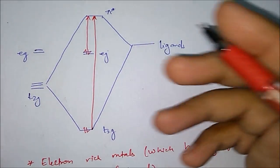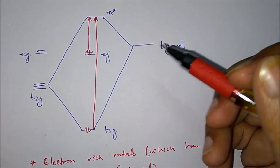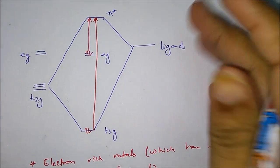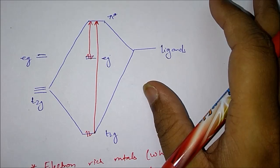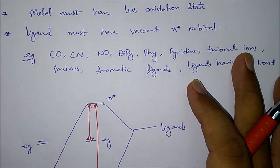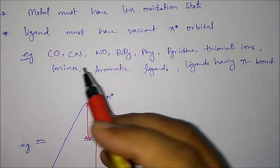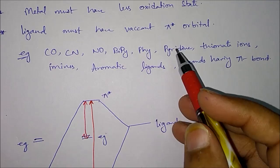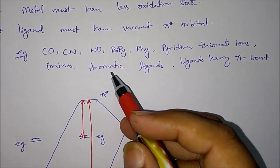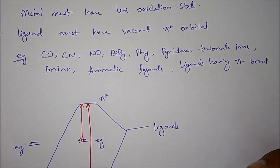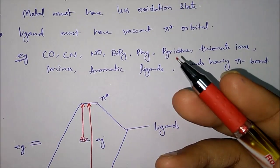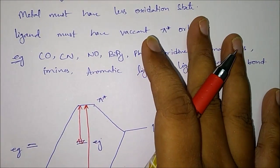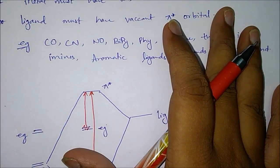Questions can be asked about which complexes will be colored. First, identify whether it is MLCT or LMCT based on the ligands. If the ligand is a pi donor ligand, then it should be LMCT. If the ligand has pi anti-bonding vacant orbitals - like CO (carbonyl), CN (cyanide), NO, bipyridine, pyridine, thionate ions, imines, aromatic ligands, and ligands with pi bonds - they will generally show metal to ligand charge transfer. In MLCT, those with filled EG orbitals will be colored.